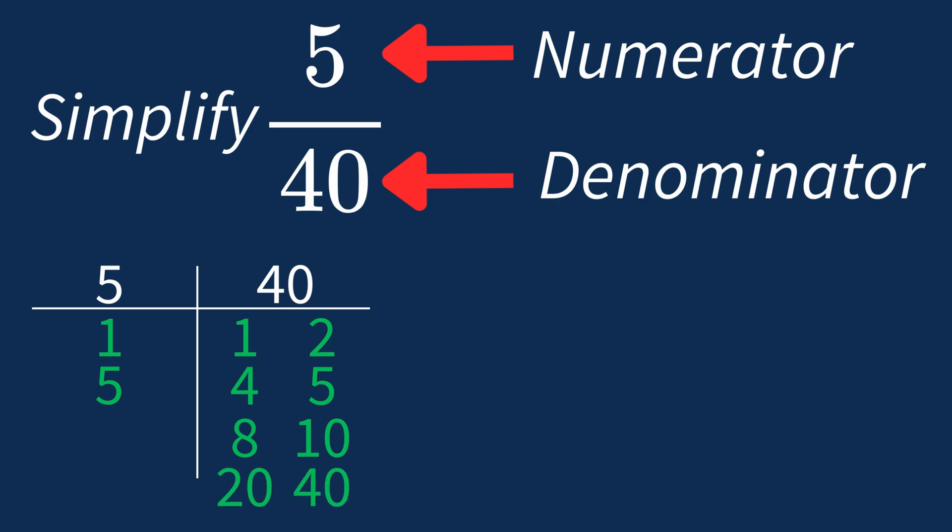So the largest common factor between 5 and 40 is 5. This means we can divide both the numerator and denominator by 5 to simplify the fraction.